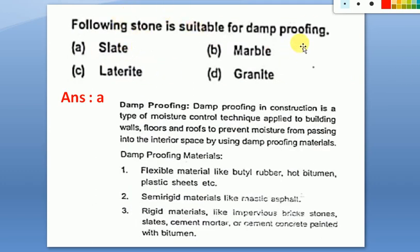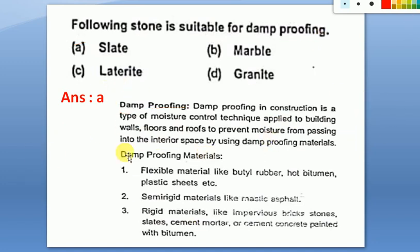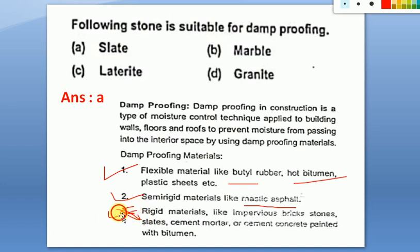Next question: which stone is suitable for damp proofing? Slate is always used for damp proofing. Damp proofing is a moisture control technique applied to building walls, floors, and roofs. Materials include flexible types like bitumen and rubber, semi-rigid like mastic asphalt, and rigid materials like impervious bricks, stones, slates, cement mortar, or cement concrete painted with bitumen. So slate is the answer.